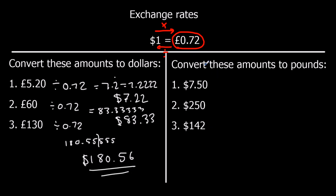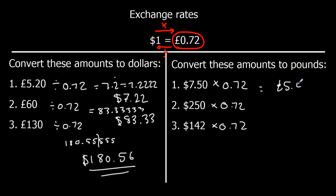These ones are dollars to pounds — dollars to pounds is going forwards, so that's times by the exchange rate, times by 0.72 in this case. 7.50 times 0.72 has come up 5.4, and it's money, so it's £5.40. 250 times 0.72 is £180. And 142 times 0.72 is £102.24.